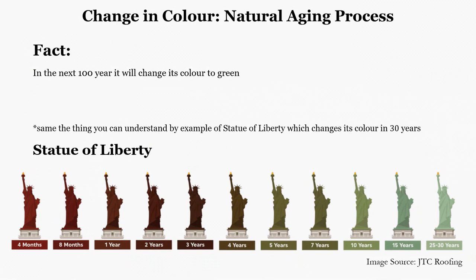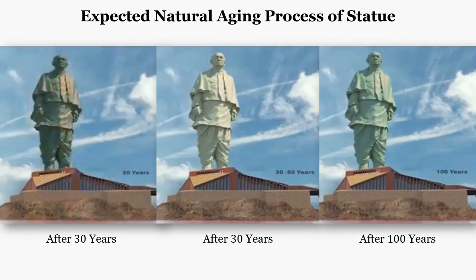An interesting fact is that in the next 100 years, the Statue of Unity will change its color to green. For example, the panels of the Statue of Liberty are made of copper, and over time through weathering, copper created a thin layer of copper carbonate called patina. Although some people worried that the color change meant the statue was decaying, patina actually protects the copper underneath from corrosion. Similarly, you can see the expected natural aging process for the Statue of Unity over the next 100 years.